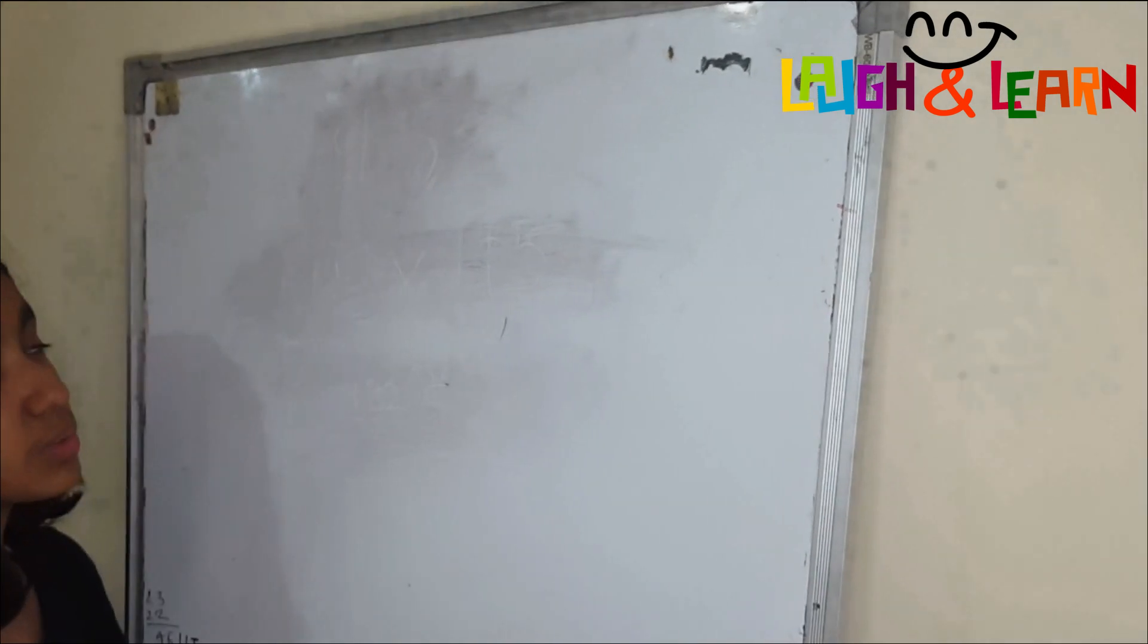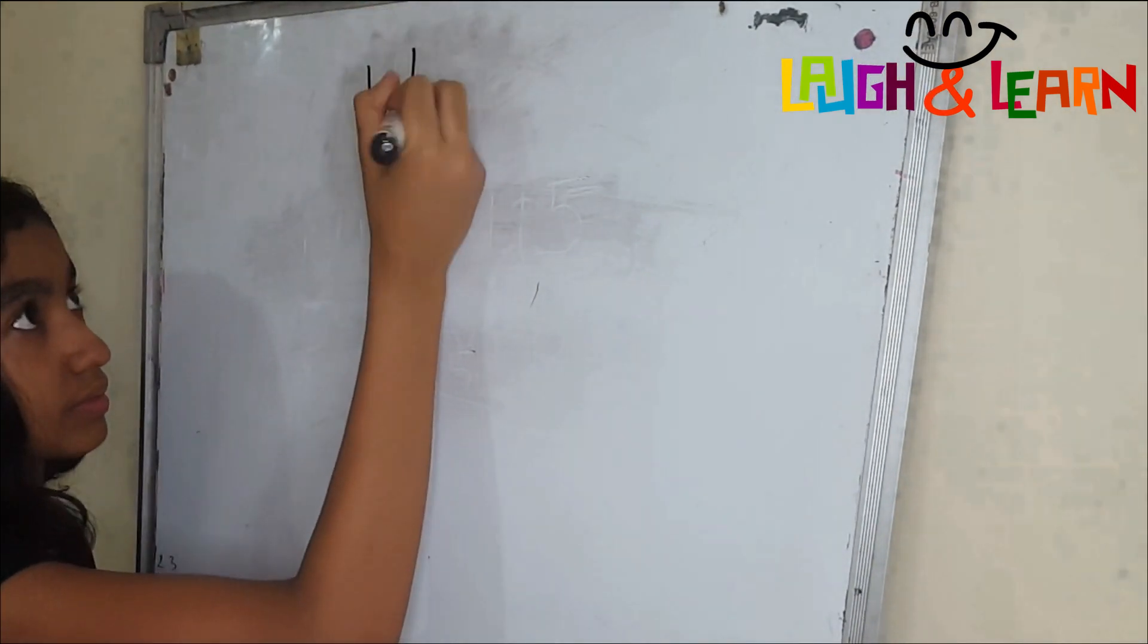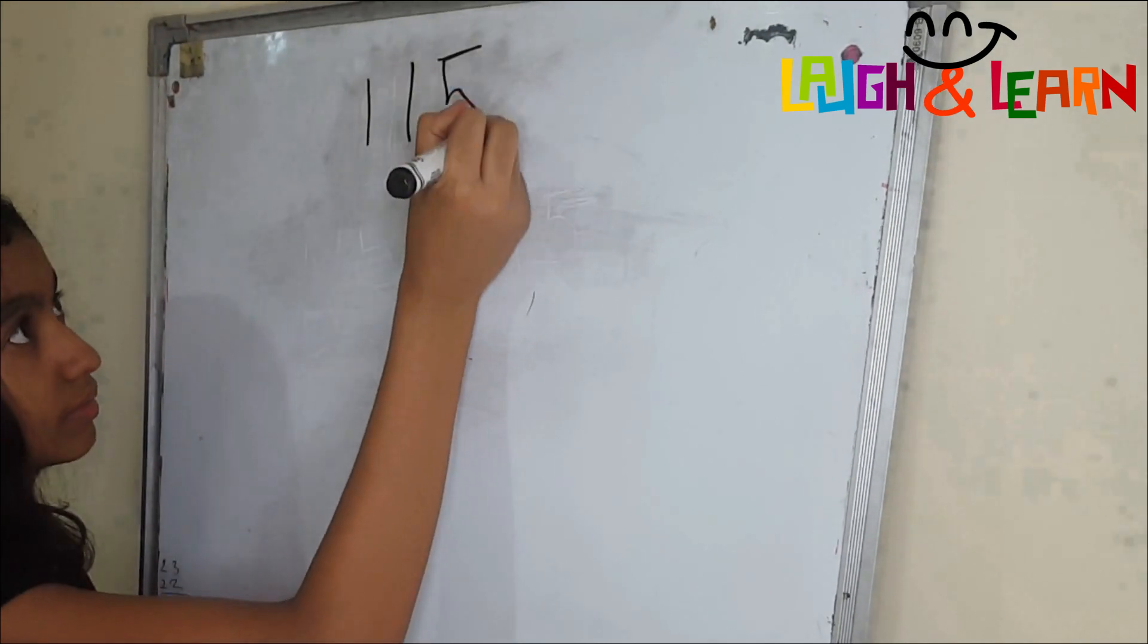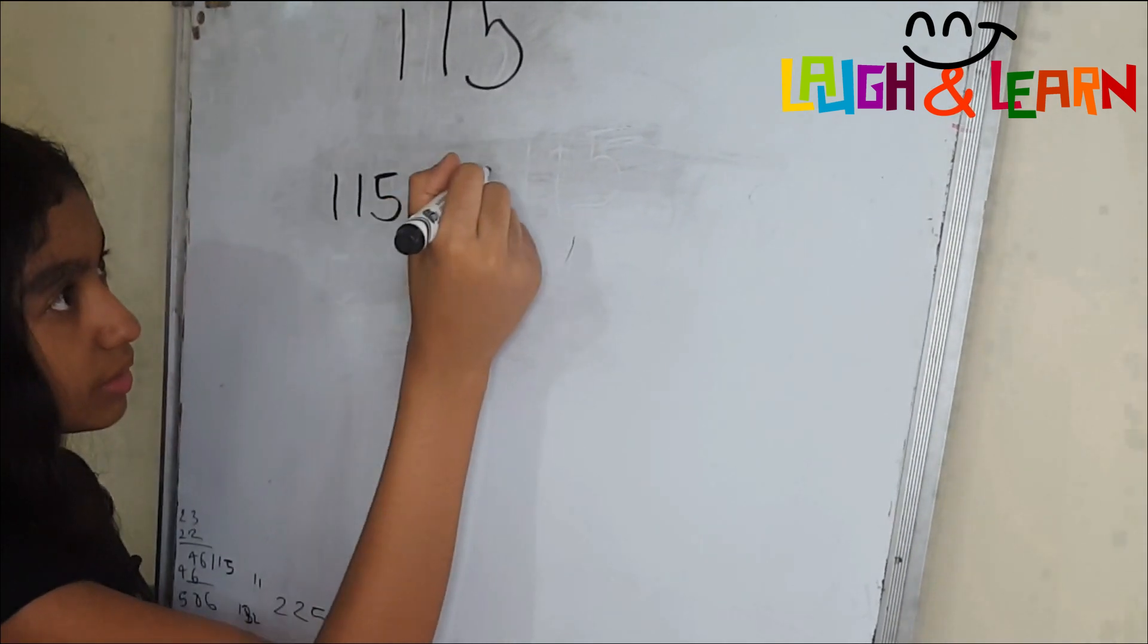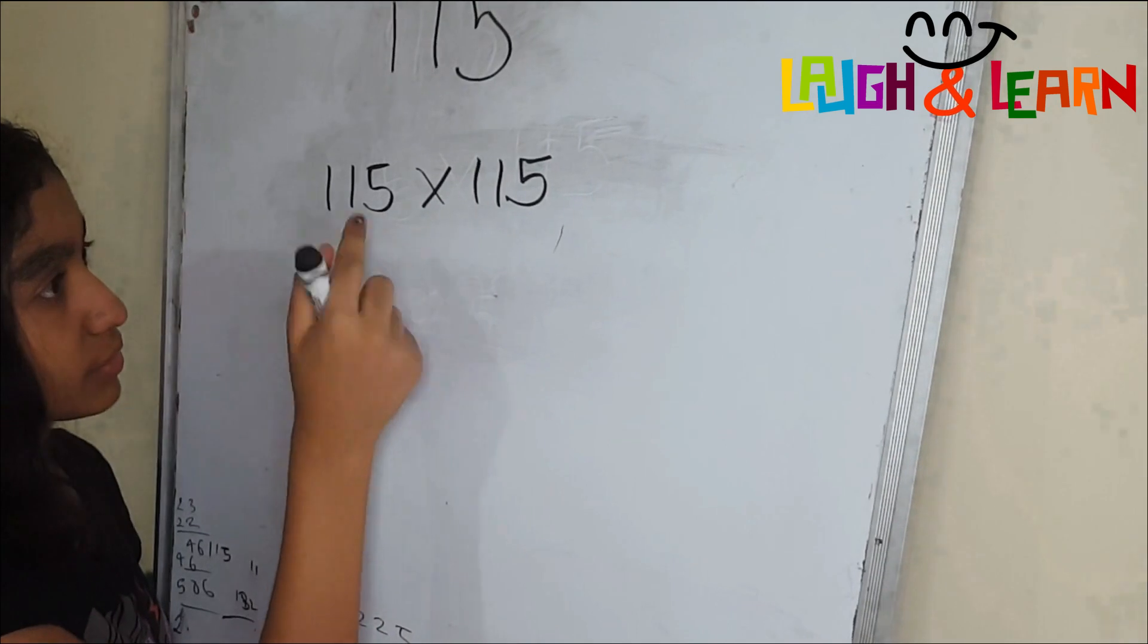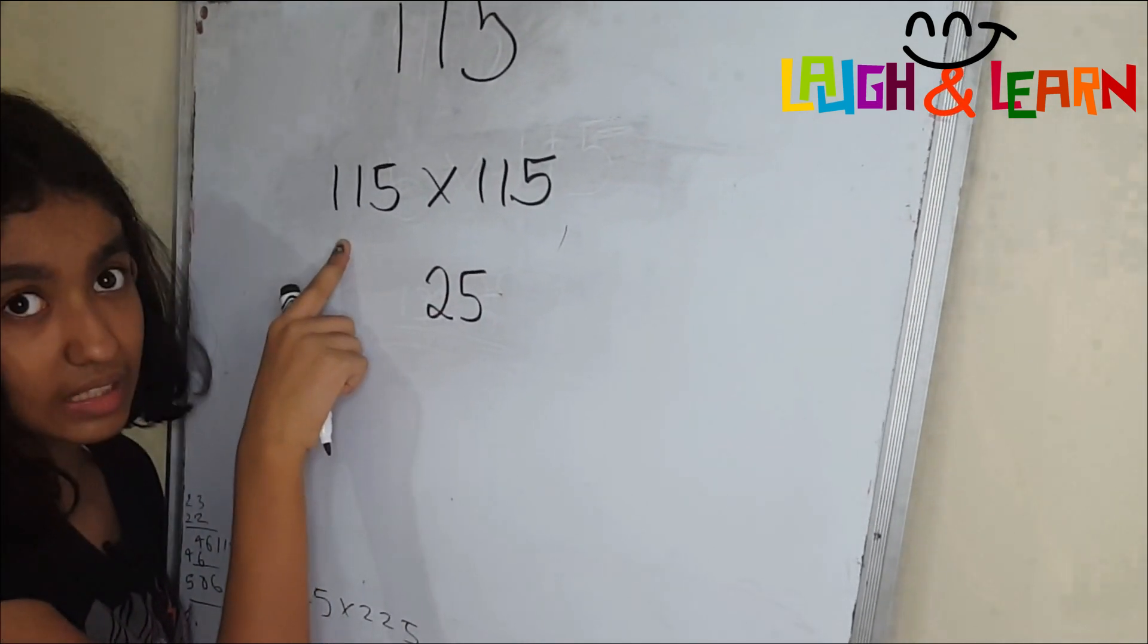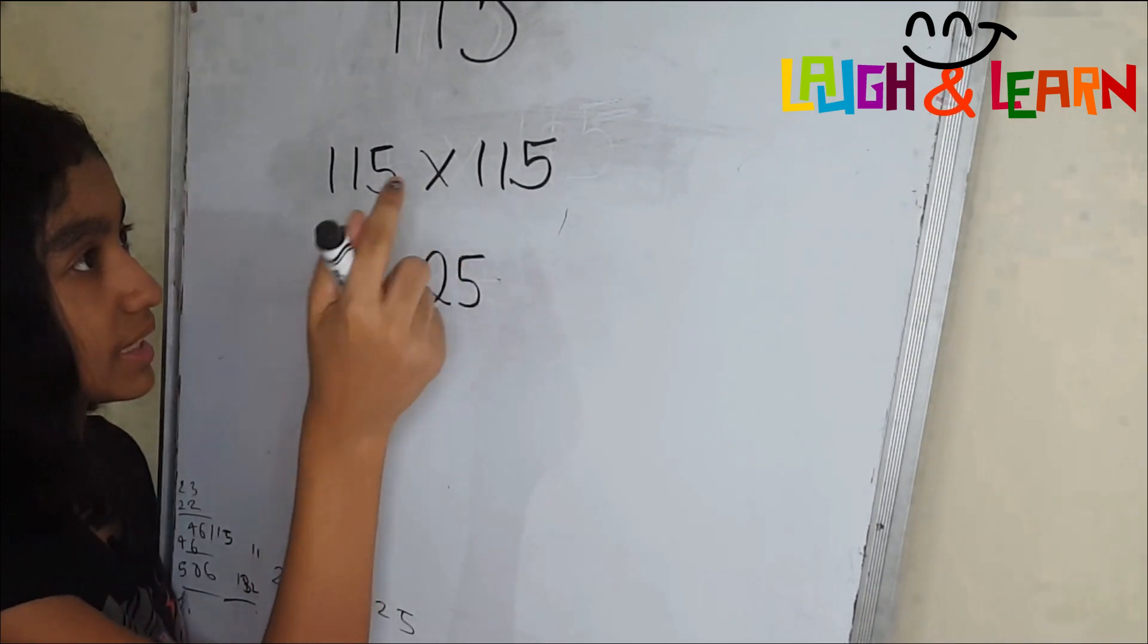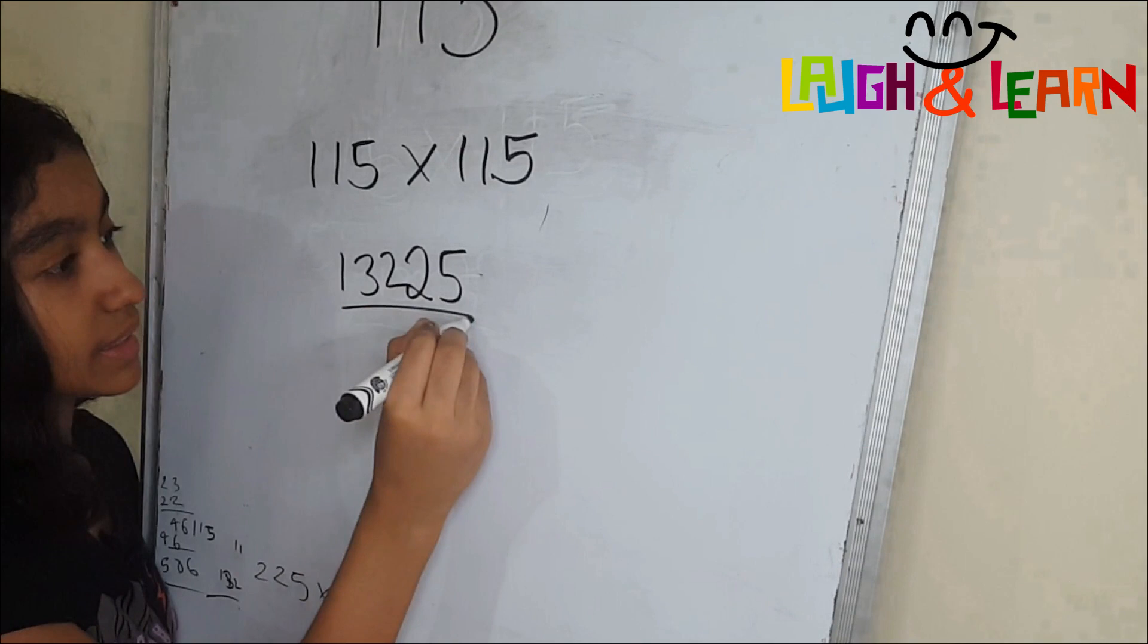Now let's do 115. So 115 times 115. So 5 times 5 equals to 25. The next number after 11 is 12, so 12 times 11 equals to 132...25. This is the answer.